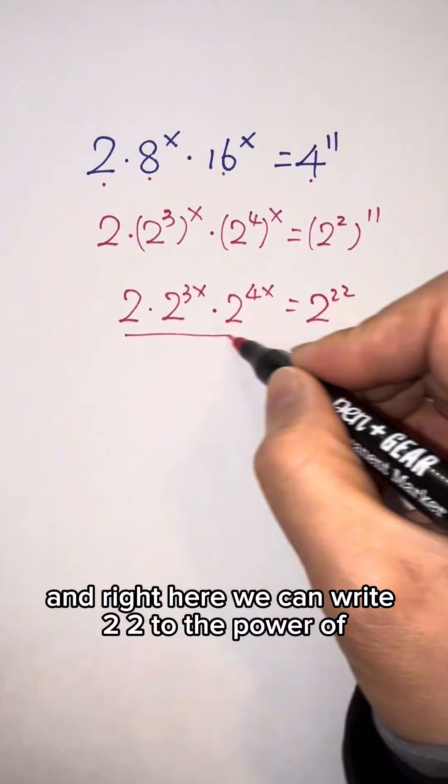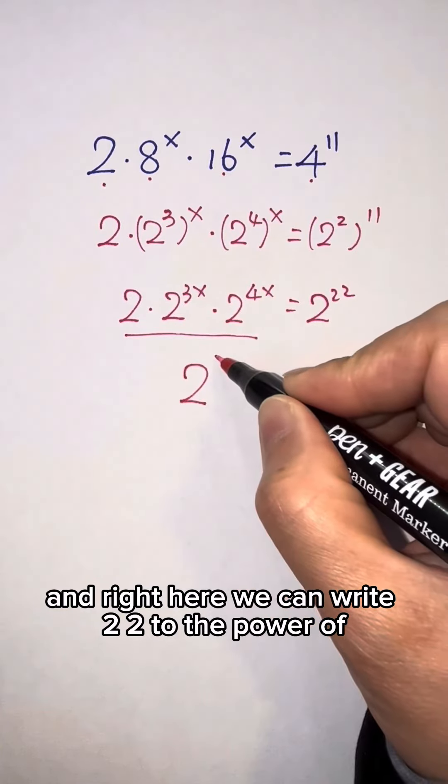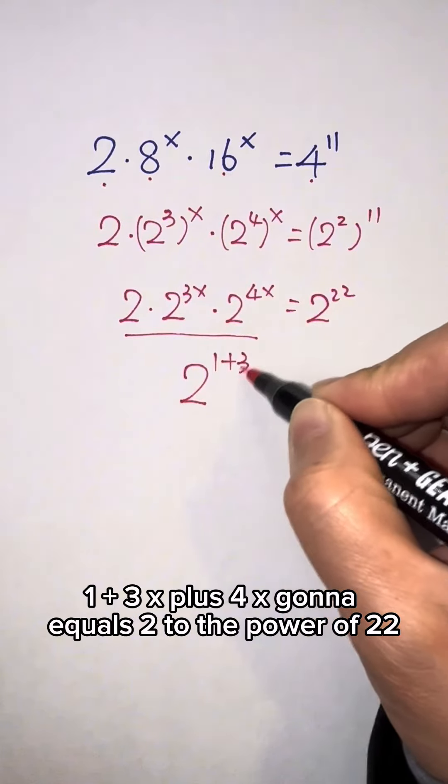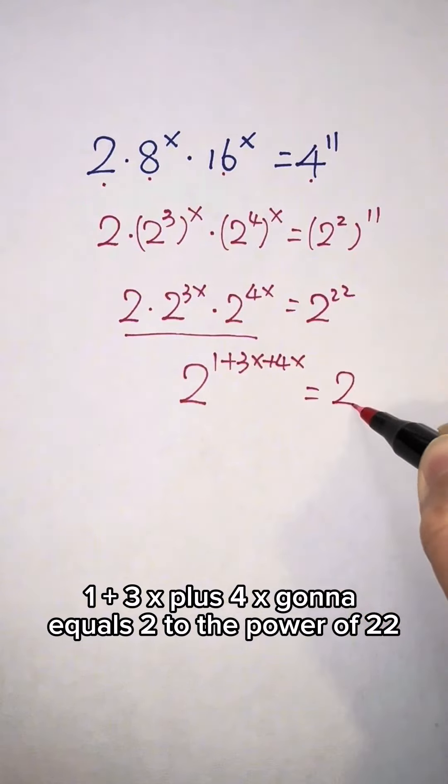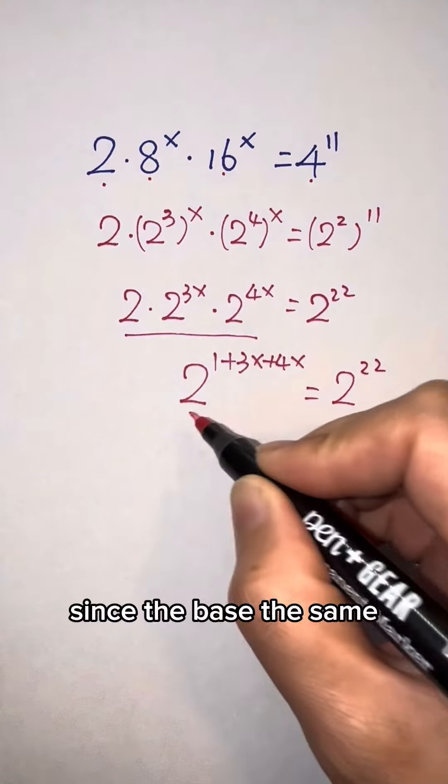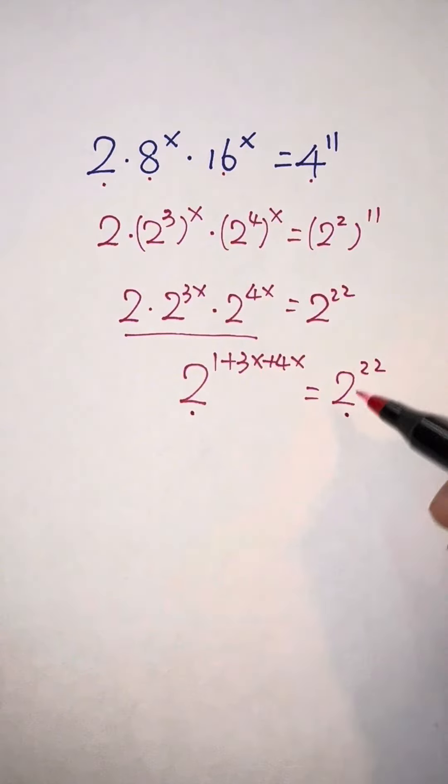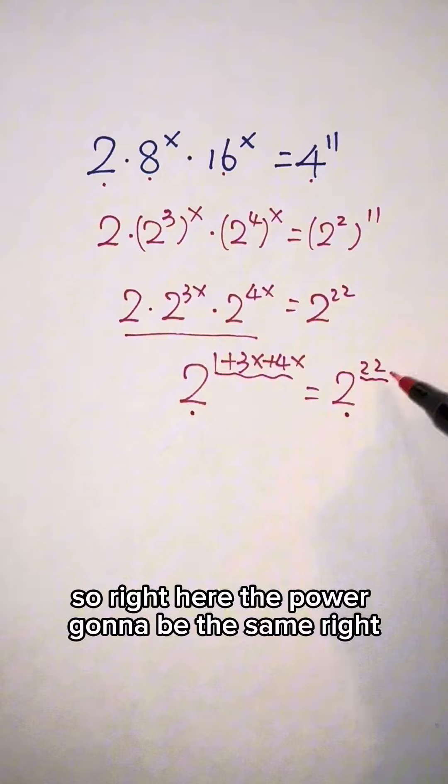And right here we can write 2 to the power of 1 plus 3x plus 4x equals 2 to the power of 22. Since the base is the same, the power is going to be the same, right?